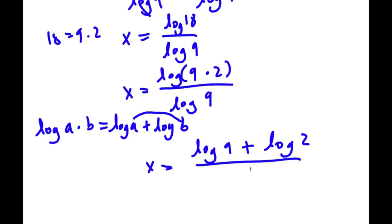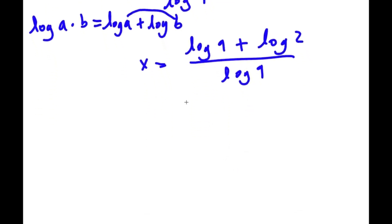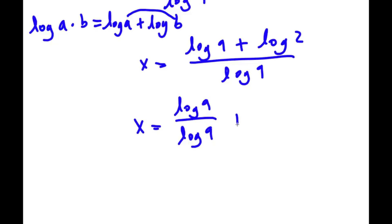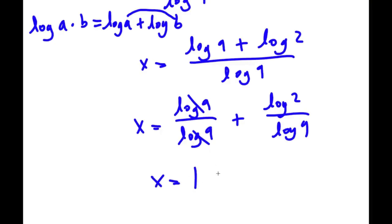So now I have log 9 plus log 2 divided by log 9. This is the same thing as log 9 over log 9 plus log 2 over log 9. I simply divided it into two parts. Now log 9 over log 9 cancels out to 1, so I have 1 plus log 2 over log 9.